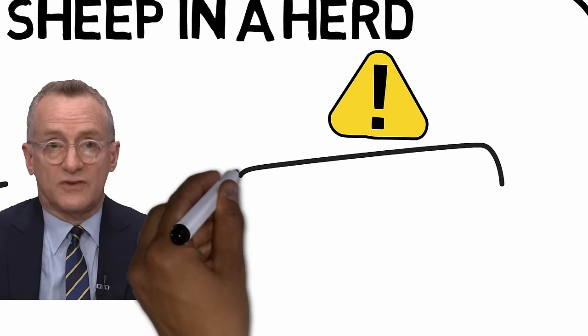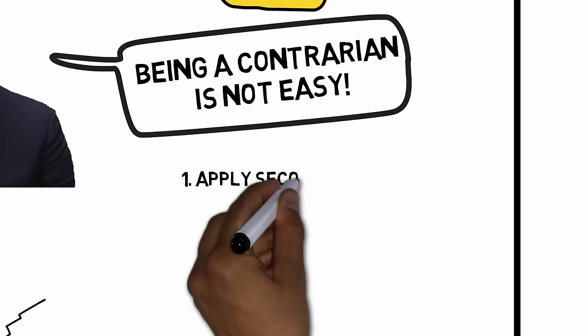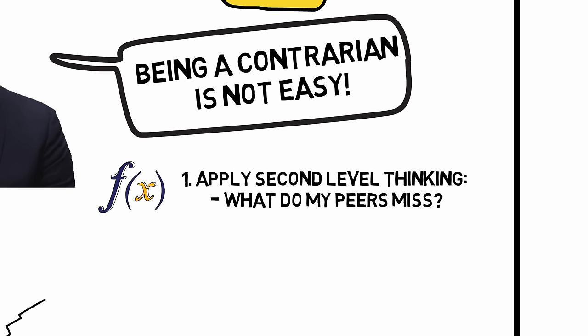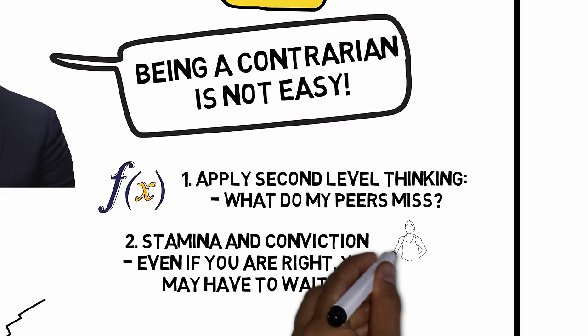However, being a contrarian is not an easy task. In the first phase, you must apply second-level thinking, and make a judgment that contradicts the one of your peers. This requires both knowledge and confidence. Secondly, you need to have stamina, because your predictions might not unfold directly.